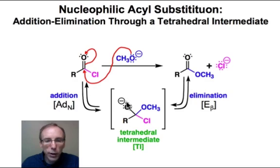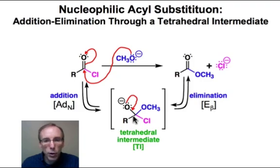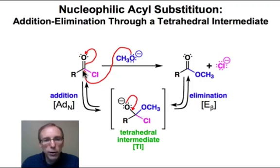This turns around and gets ready to do a beta elimination, but at this point there's a choice to make. One could imagine that there are two leaving groups on this position. For example, if the leaving group is the methoxide, one would return to the starting point, and that's why these arrows are there — it shows the potential for this step to be reversible.